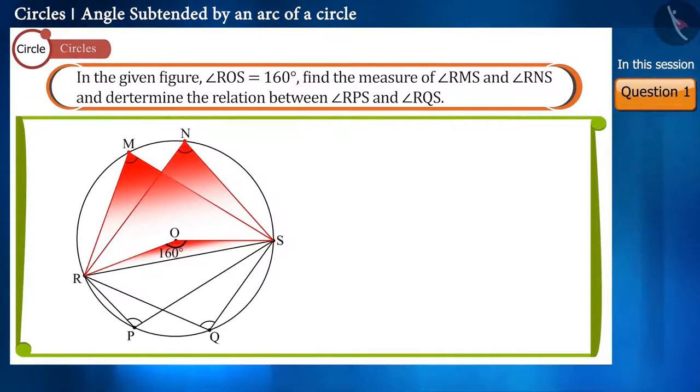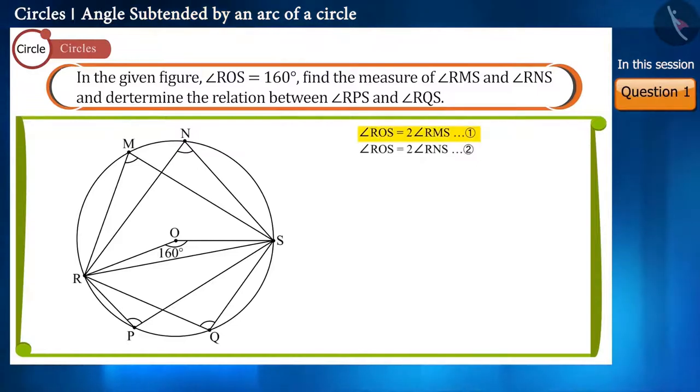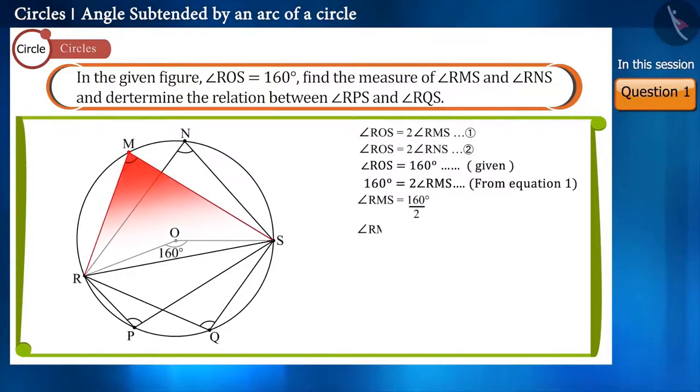We can write this as equation 1 and equation 2. In this question, the value of angle ROS is given. In equation 1, we substitute its value and solve it. In this way, we get angle RMS equal to 80 degrees. Similarly, we get angle RNS equal to 80 degrees.